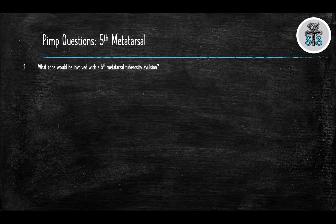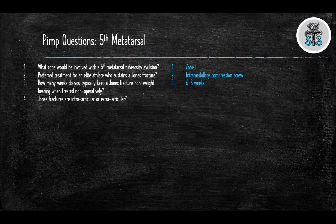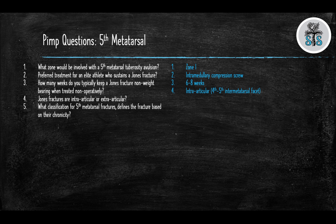Pimp questions: What zone would be involved with a 5th metatarsal tuberosity avulsion? Zone 1. What is the preferred treatment for an elite athlete who sustains a Jones fracture? Intramedullary compression screw. How many weeks do you typically keep a Jones fracture non-weight bearing when treating non-operatively? 6 to 8 weeks. Are Jones fractures intra-articular or extra-articular? Intra-articular. What classification defines 5th metatarsal fractures based on chronicity? The TORG classification.